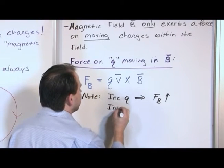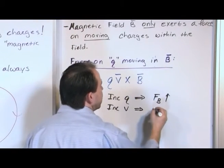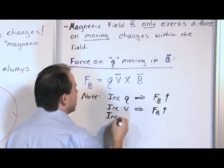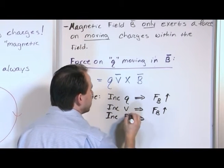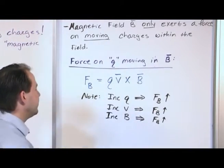If I increase the velocity of that particle moving through the field, then the force on it increases. And if I increase the magnetic field, if I make it stronger, then the magnetic force increases. So at first glance, this equation makes sense.